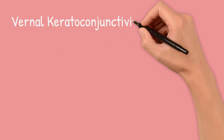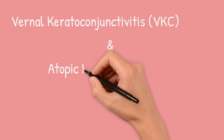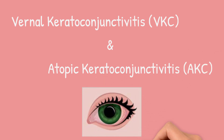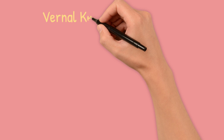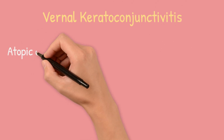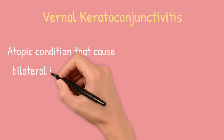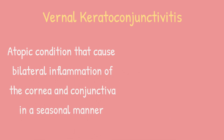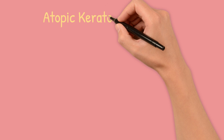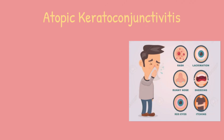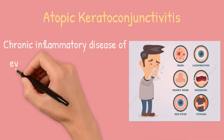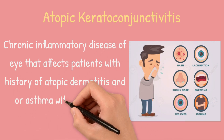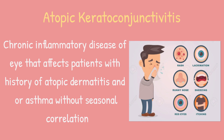Hello everyone. This video will talk about vernal keratoconjunctivitis and atopic keratoconjunctivitis. Vernal keratoconjunctivitis is an atopic condition that causes bilateral inflammation of the cornea and conjunctiva in a seasonal manner. Atopic keratoconjunctivitis is a chronic inflammatory disease of the eye that affects patients with a history of atopic dermatitis and/or asthma without seasonal correlation.